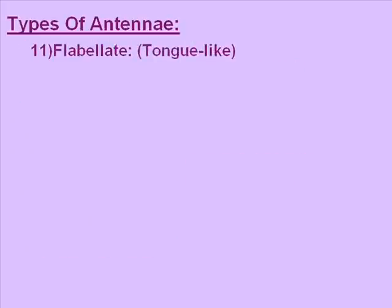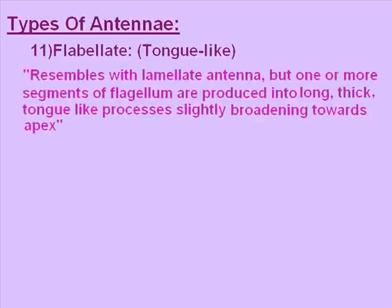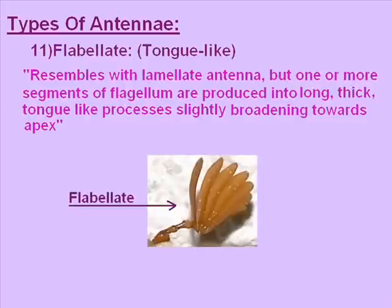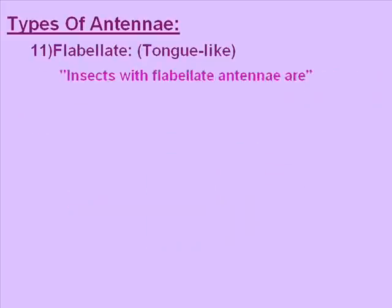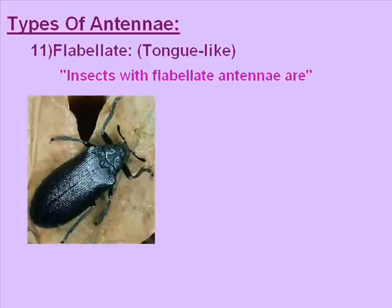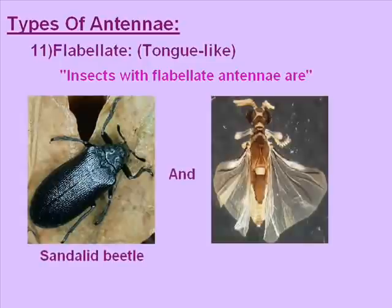The eleventh type is flabellate antenna, meaning tongue-like structure. Flabellate resembles lamellate, but in flabellate, one or more segments of the flagellum are produced into long, thick, tongue-like processes slightly broadening towards the apex. The picture shows the flabellate antenna with arrows pointing towards the tongue-like projections. Flabellate antennae are found in sandalid beetles and male stylopids.